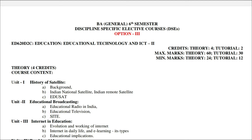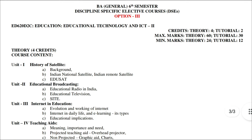Welcome back to Basics in Education. In this video we will be discussing the syllabus and case paper for BA sixth semester Education, University of Kashmir. This is a discipline specific elective course and the core subject is Education. This is option third of the syllabus. The title of this course is Educational Technology and ICT Part 2, and the course code is ED620D2C.